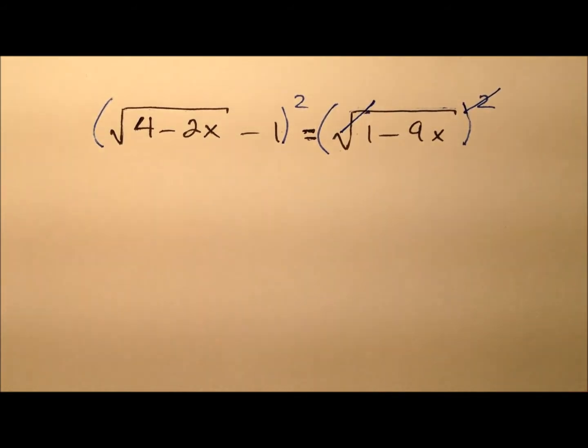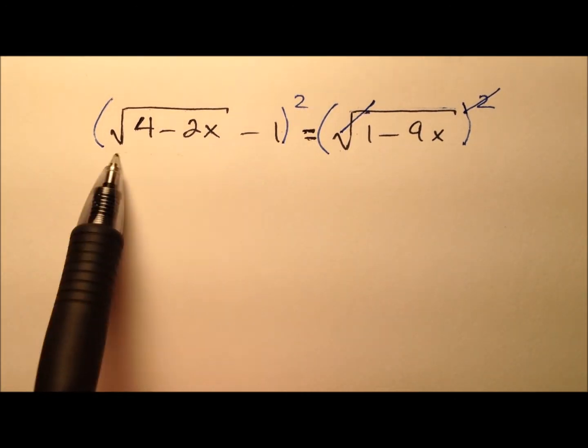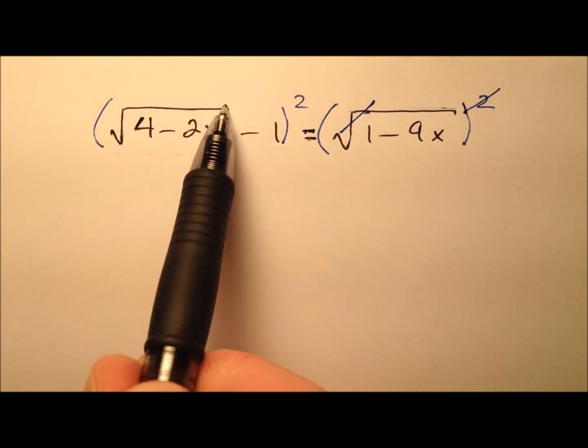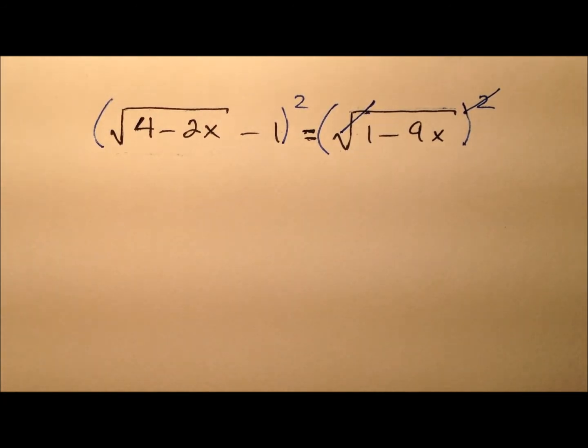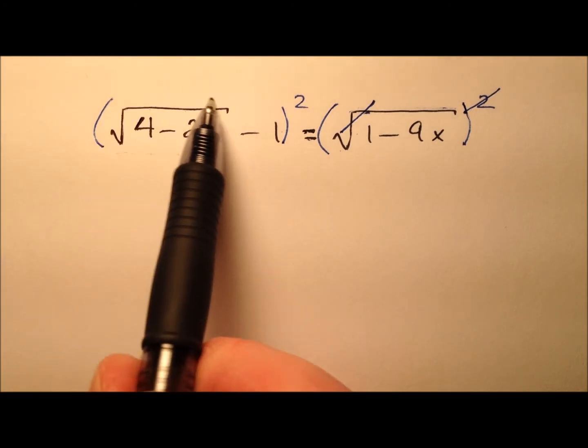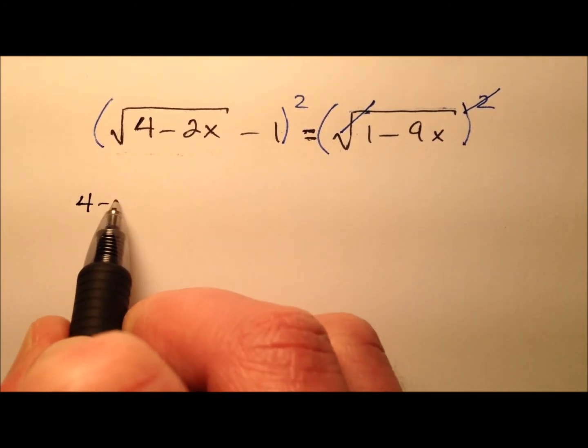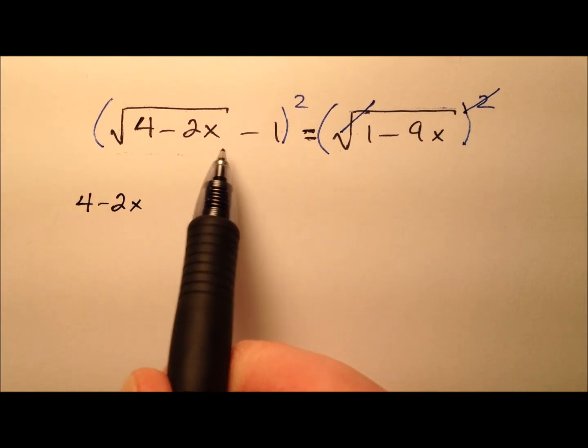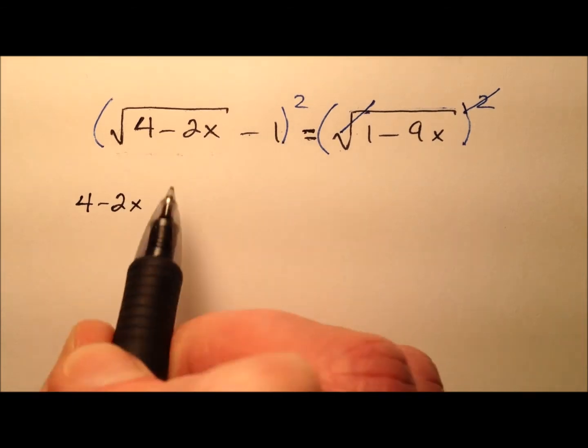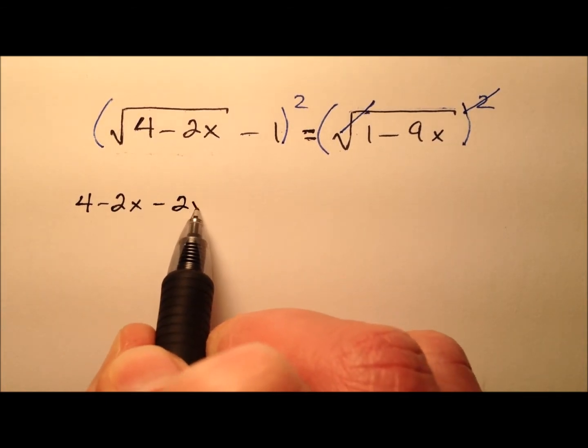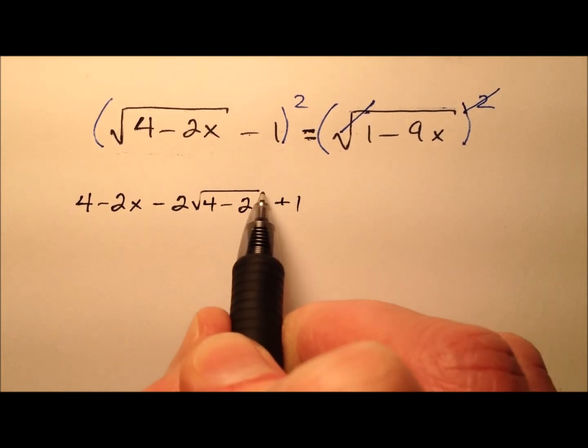On the right, those will cancel. However, on the left, we have the square of what we could consider a binomial - this square root expression minus 1. To square this, we could use our binomial formula. We're going to square the first term, which essentially just gets rid of the square root. Then we're going to double the product of the 2, so negative 1 times this, but we're going to double that, so minus 2. And then the last one squared, so plus 1.